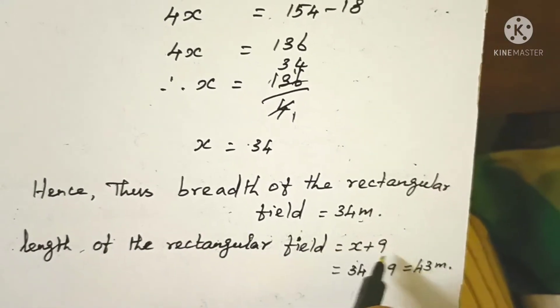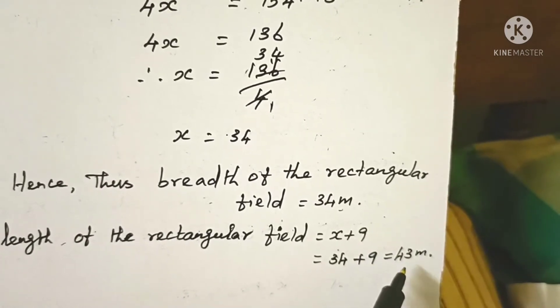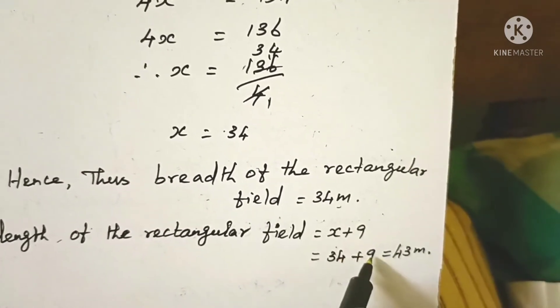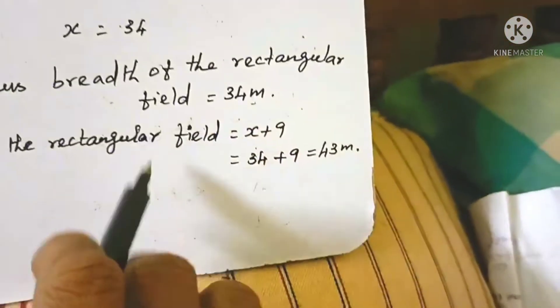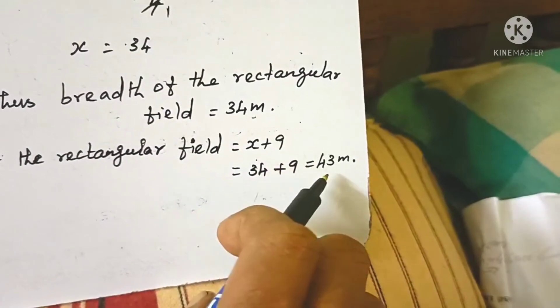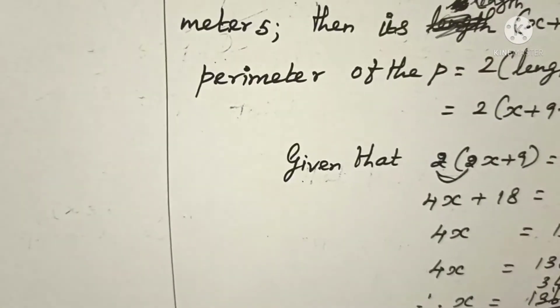The length of the rectangular field is x + 9 = 34 + 9 = 43 meters. So the rectangular field has length 43 meters and breadth 34 meters. Thank you.